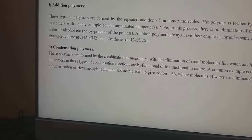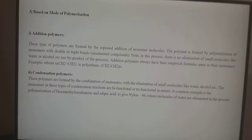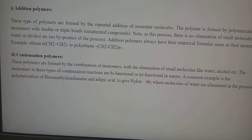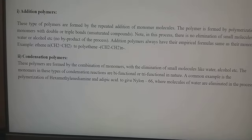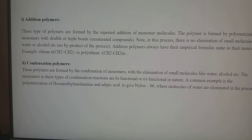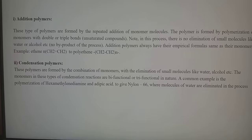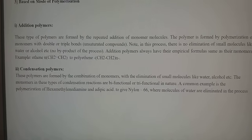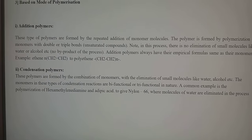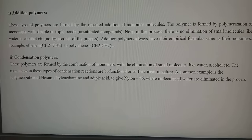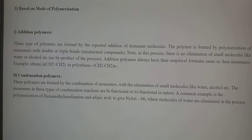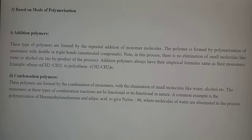The third basis of classification is the mode of polymerization. Polymerization can occur by two ways: addition polymerization and condensation polymerization. Addition polymers are formed by the repeated addition of single monomer molecules. The polymer is formed by polymerization of monomers which have double or triple bonds. In this process there is no elimination of small molecules like water or alcohol — there is no byproduct. Addition polymers always have empirical formulas identical to their monomers. For example, polythene.